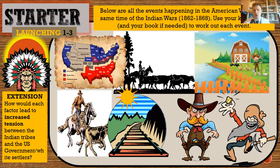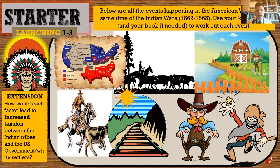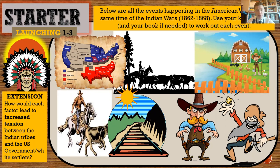As a starter, here are some events which happened in the American West during the 1860s, and I would like you to try and work out what each one of these events is. All of these things are important things which made migration happen during the 1860s — the same time as these Indian wars we've been studying. There are six things on the board; try and bullet point what you think they are. For an extension, explain how each factor leads to more tension between tribes and the US government or white settlers. Pause the video and have a go — there is absolutely zero point in just waiting for the answers and writing them down.